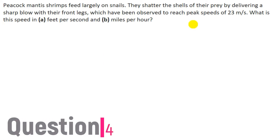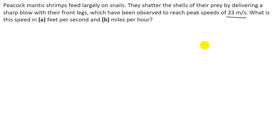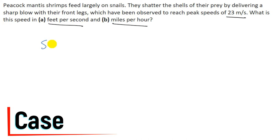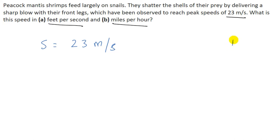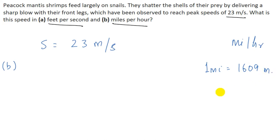The next question has a speed given in meters per second: 23 meters per second. We have to write this speed in feet per second and miles per hour. Part A is pretty simple — you can do it on your own. I'll be solving part B. The speed given is 23 meters per second and we have to convert this into miles per hour. The unit conversions are: one mile is approximately 1609 meters, and one hour is 3600 seconds.